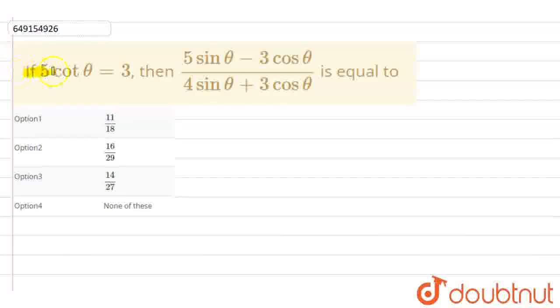Hello everyone, the question is: if 5 cot θ is equal to 3, then (5 sin θ - 3 cos θ)/(4 sin θ + 3 cos θ) is equal to? We have 4 options: option 1 is 11/18, option 2 is 16/29, option 3 is 14/27, and option 4 is none of these.